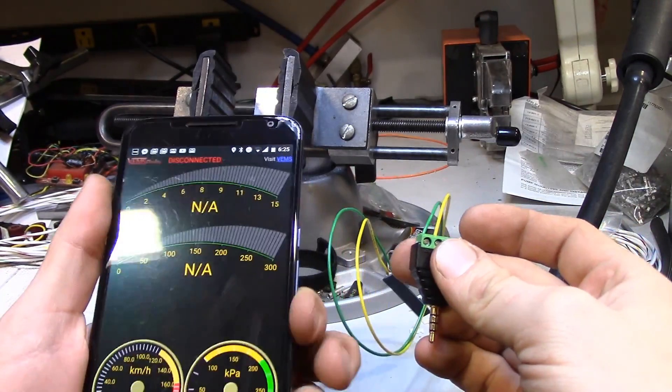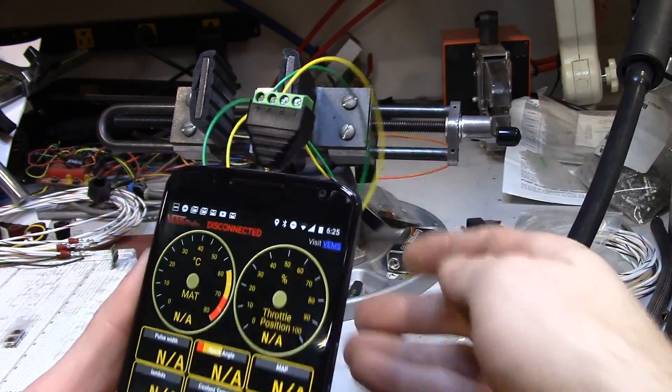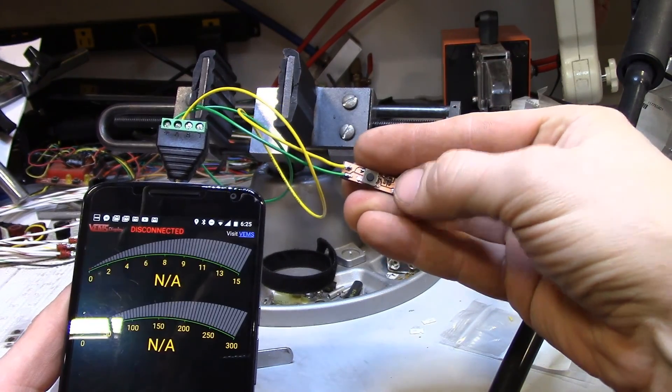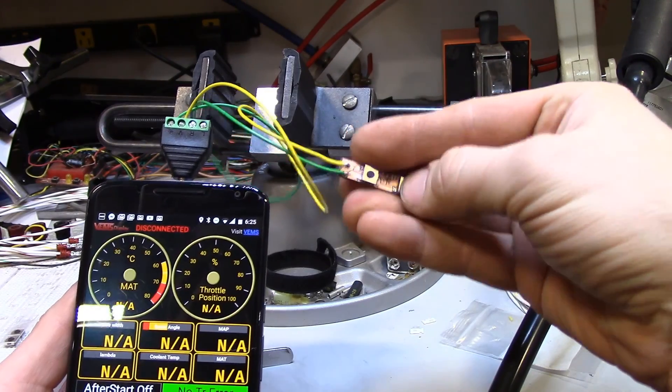So we have VEMS2 running on my phone. Go to the first screen. Use the volume buttons. Plug this in. And the right button changes screens. Left button changes screens. So it works perfect.